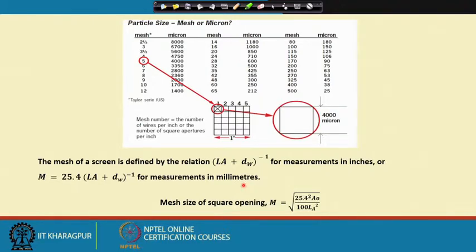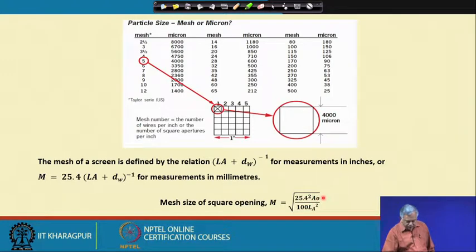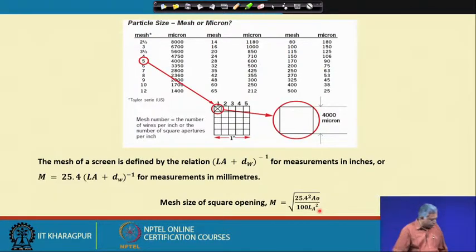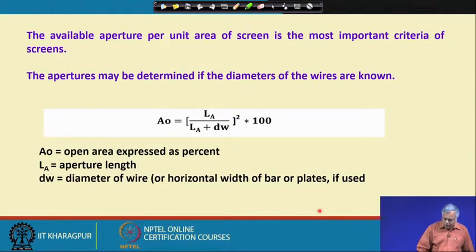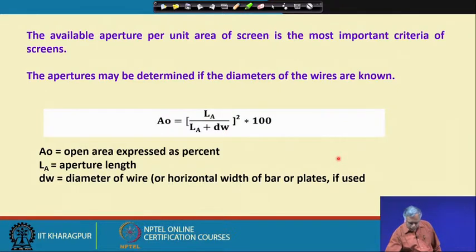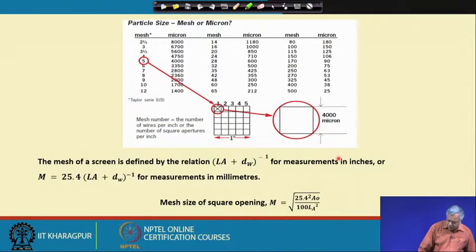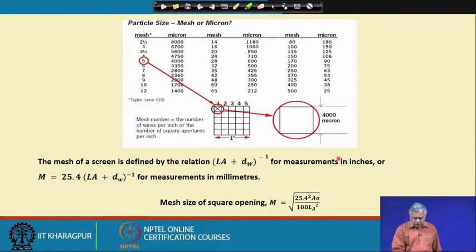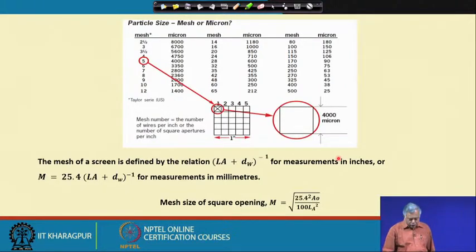The mesh size of a square opening can then be calculated. It is expressed as M = √(25.4² × A_0 / (100 × L_A²)). This formula is derived by substituting L_A + D_W = 25.4 / M into the open area equation and rearranging. So the mesh size M equals the square root of (25.4² × A_0) divided by (100 × L_A²).